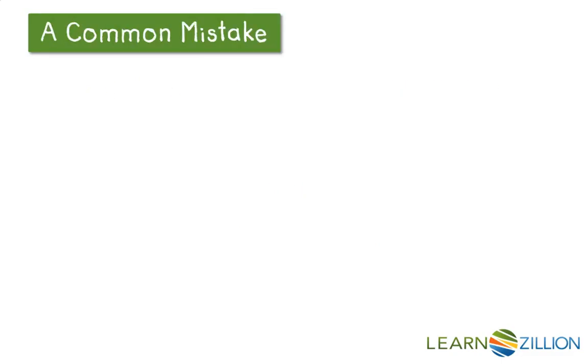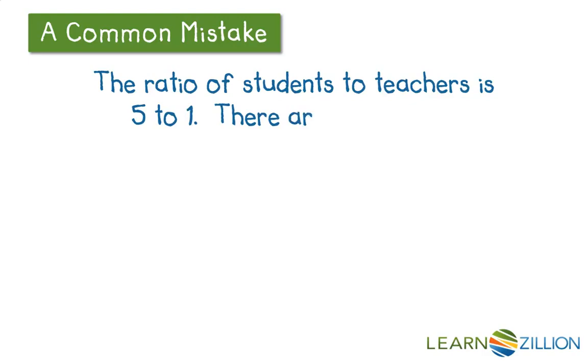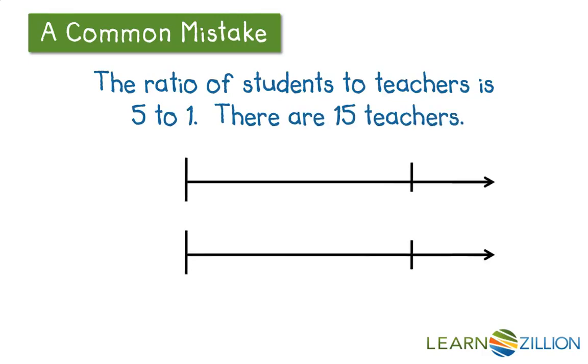The most common mistake you're going to run into when working with these problems is probably not in the actual solving, but in the setup. So if we consider that scenario, that the ratio of students to teachers is 5 to 1 and that there are 15 teachers, you may start to draw your double number lines. And as you fill in the parts and the ratio and the information, can you spot where I have made a mistake setting up these double number lines?